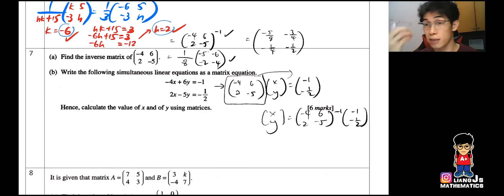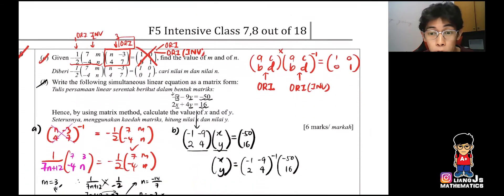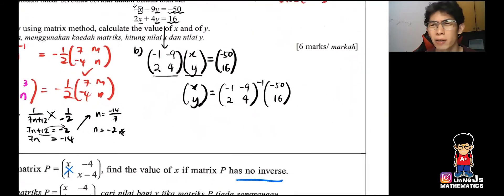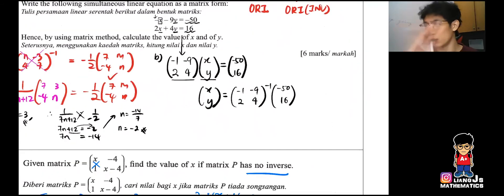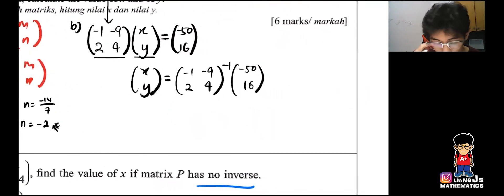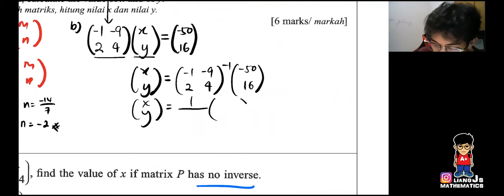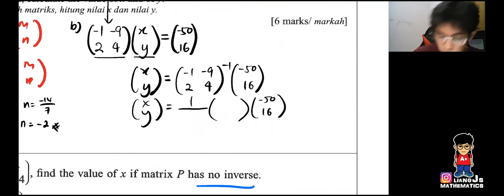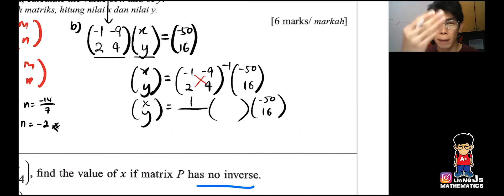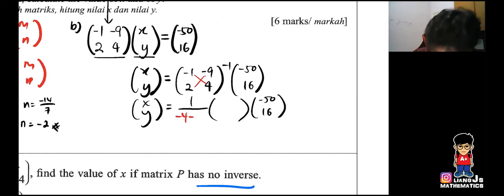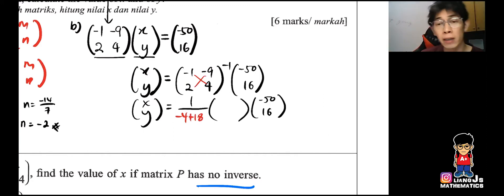Going back to our original question: since parts A and B are different things, we redo the whole process. So X and Y equals 1 over the determinant, times the inverse matrix, times [negative 50; 16]. Working it out: negative 1 times negative 50 gives negative 4 contribution; negative 2 times negative 9 gives 18. So negative 4 plus 18 gives 14.